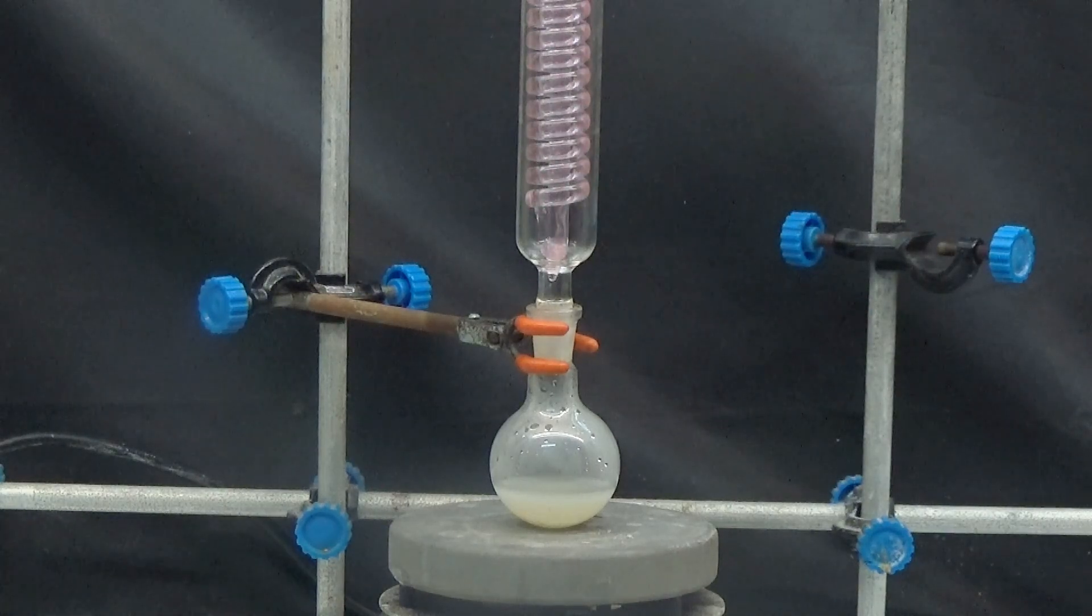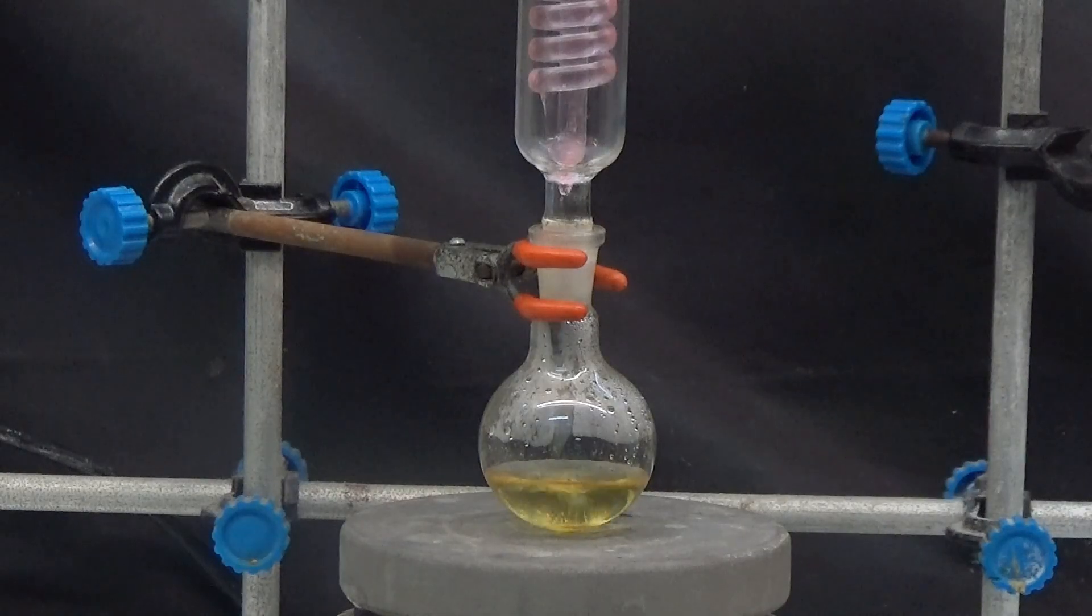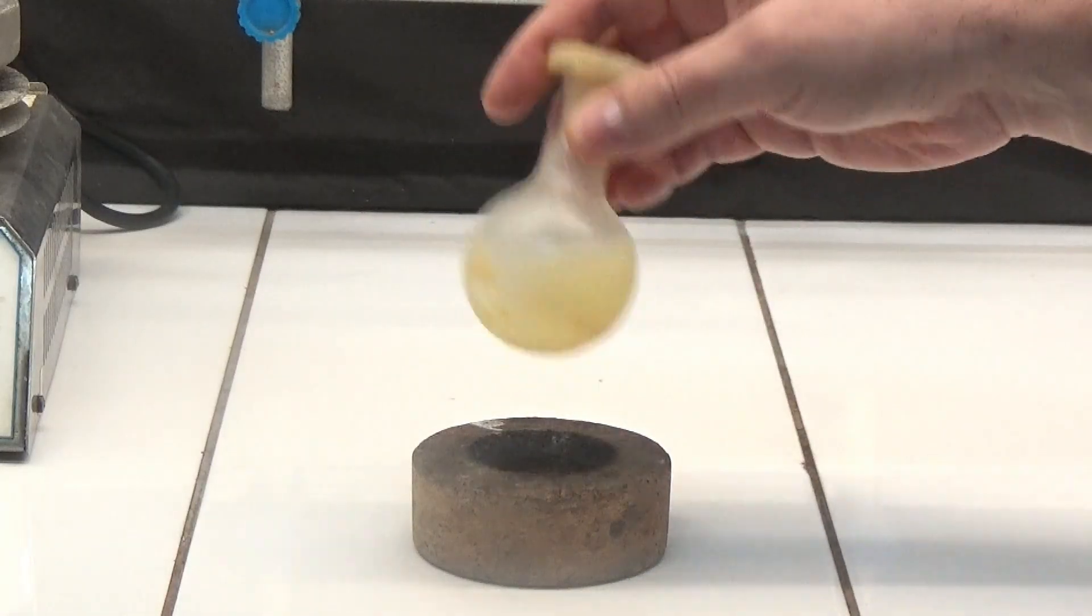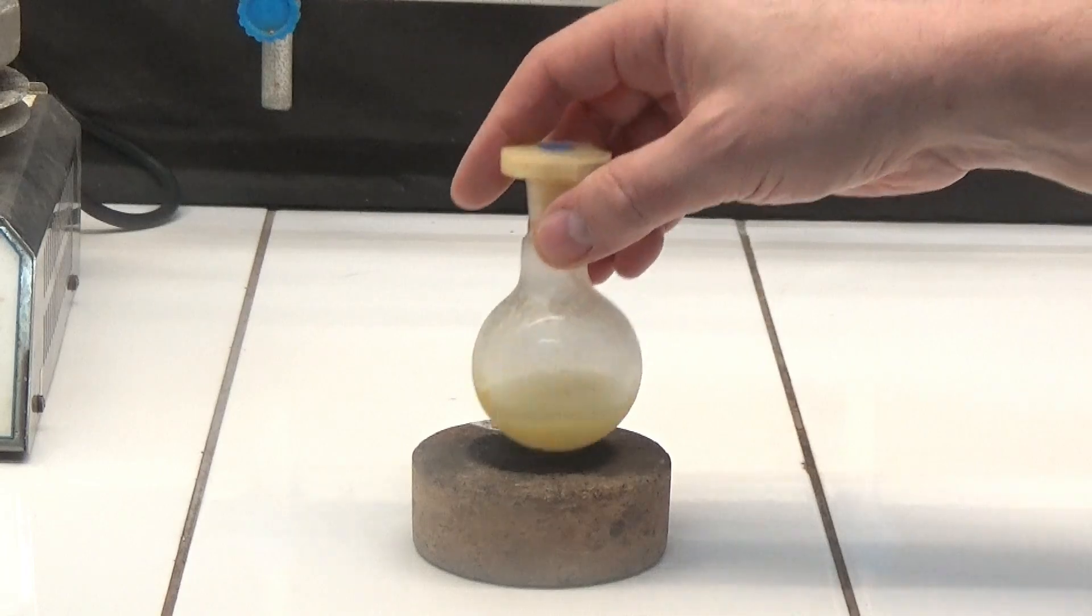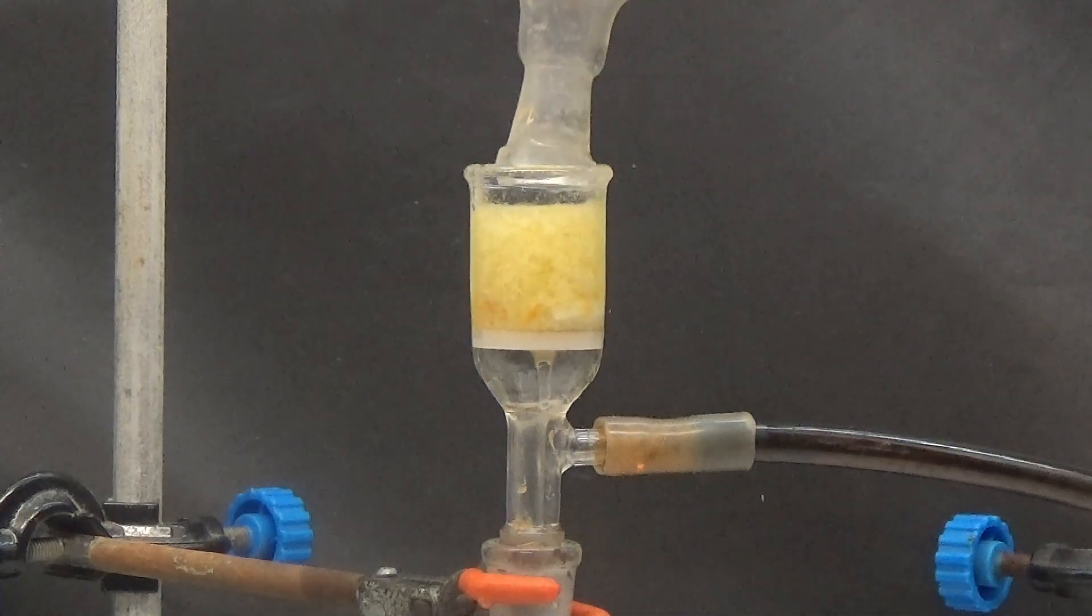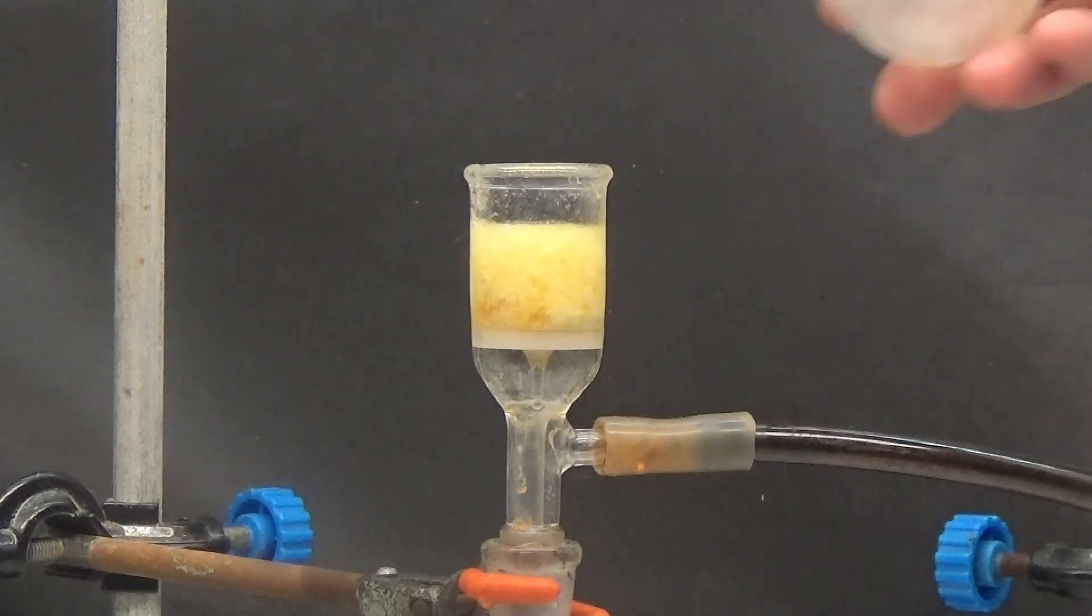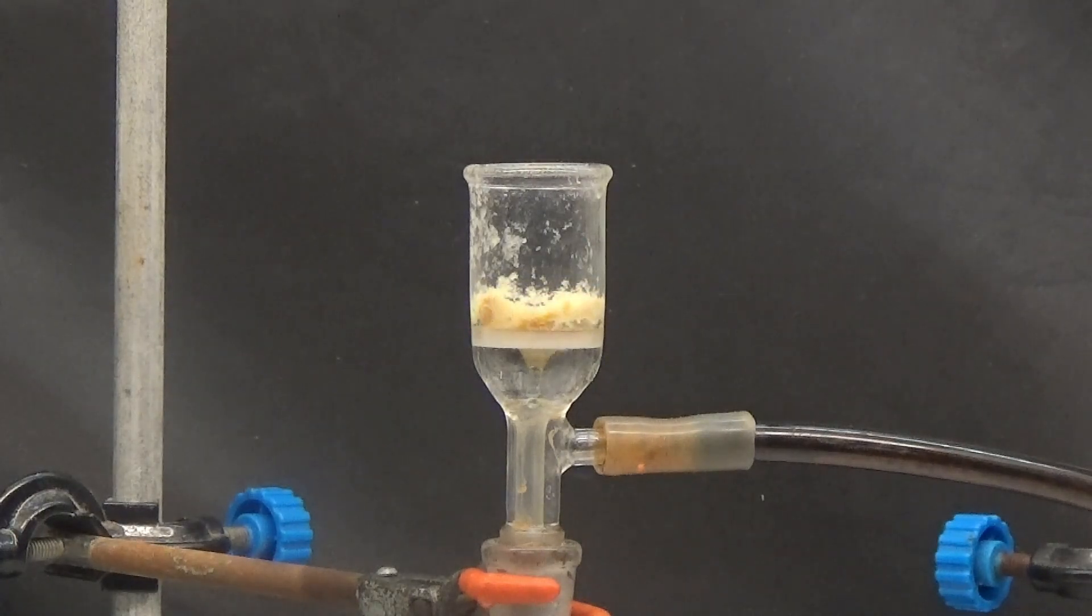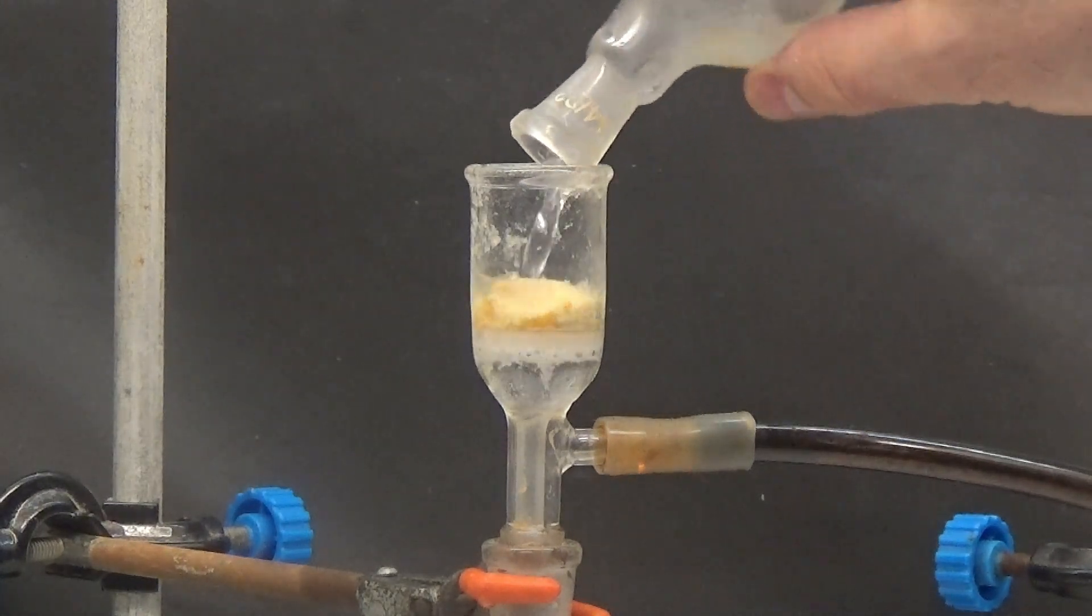Heat to reflux for 45 minutes and let cool for 1 day in the refrigerator at 0 degrees. Collect the crystals obtained by suction and wash with a little cold water. Allow to dry in the funnel by suction.